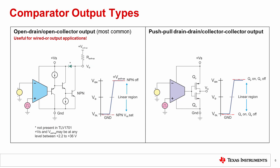Push-pull comparators, on the other hand, have an output stage consisting of a pair of output transistors. Either the upper or lower transistor in the pair turns on and actively sources or sinks current in order to drive the output high or low as needed. The P-channel upper FET turns on to source current and push the output high, while the N-channel lower FET turns on to sink current and pull the output low. No pull-up resistor is required for this type of comparator.